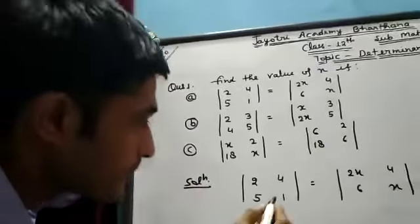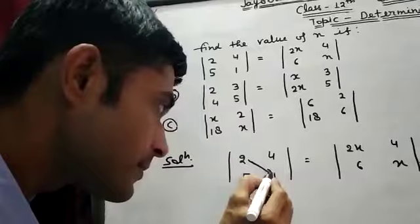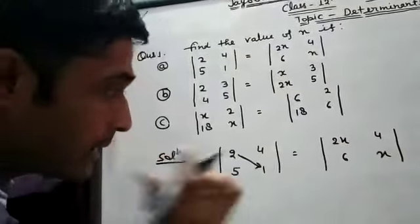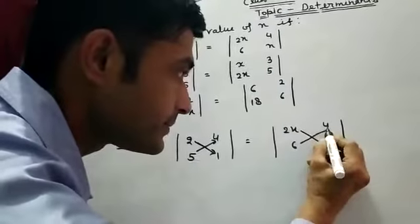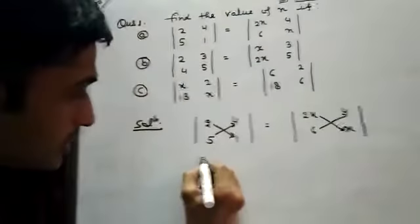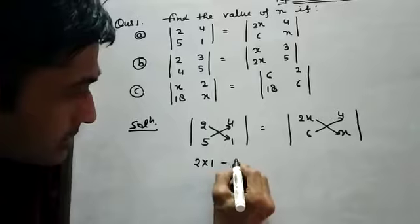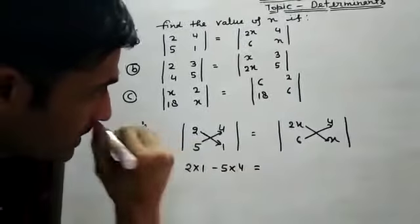So now student how we solve. 2 times 1 minus this multiply. Same as student look. 2 times 1 minus 5 times 4 equals.